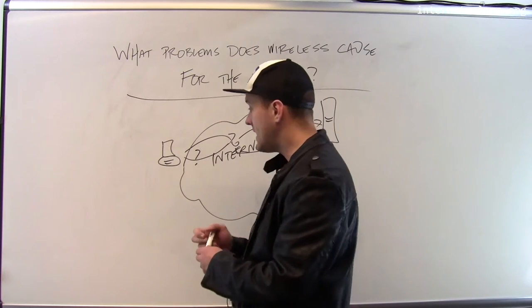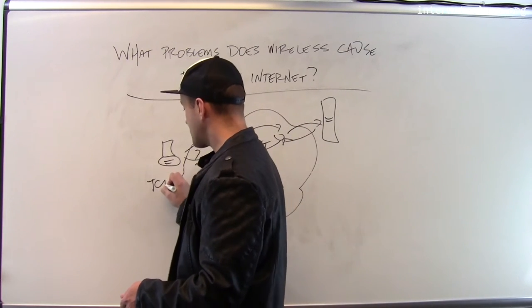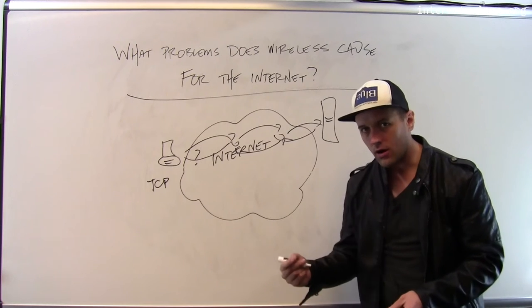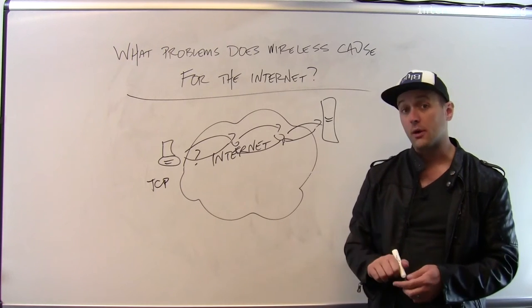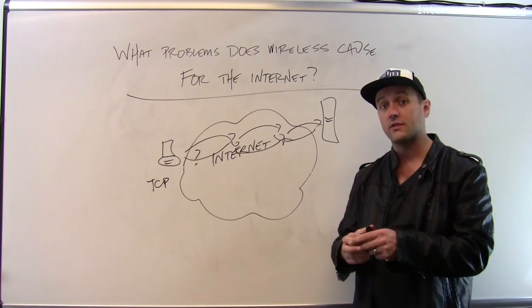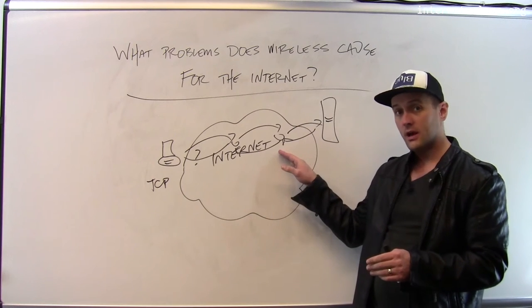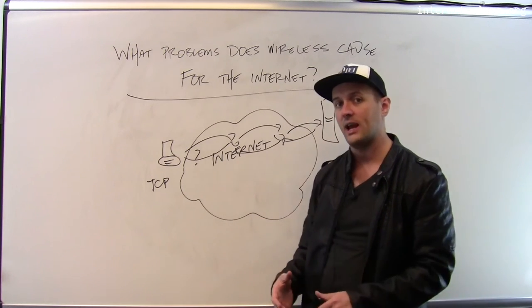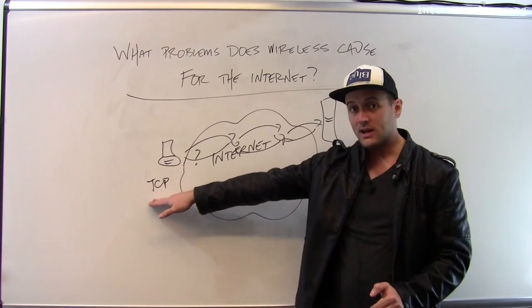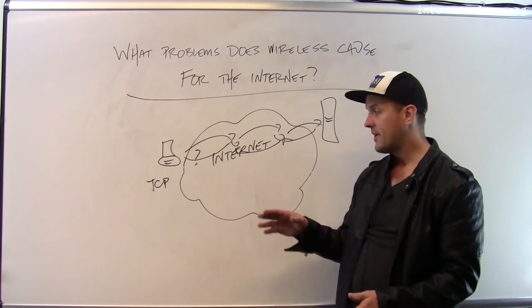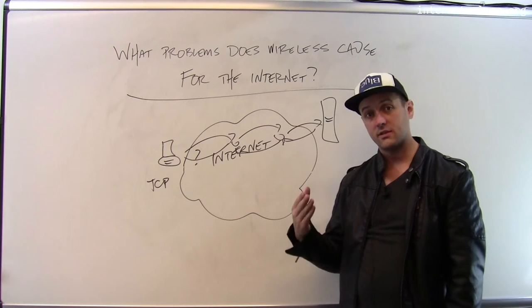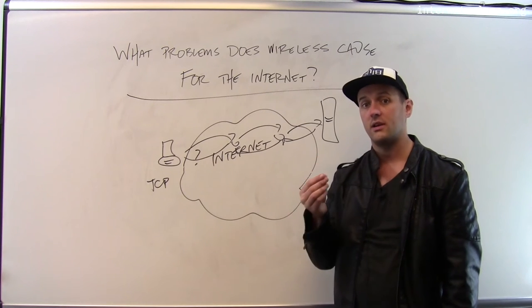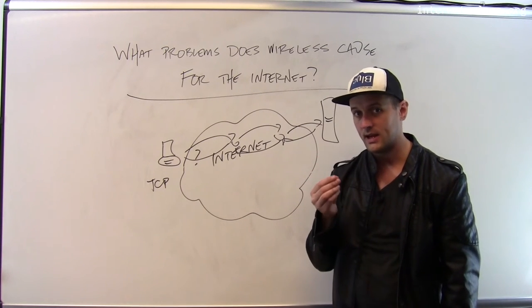And so what TCP does is that when it sees loss, it reacts to it by slowing down because it assumes that it's causing too much traffic at some router. There's some new flow that's been established through that router and there's too much traffic for that router to handle. And so what TCP does to try to share network resources more effectively is it slows down because it assumes that loss is always caused by congestion.